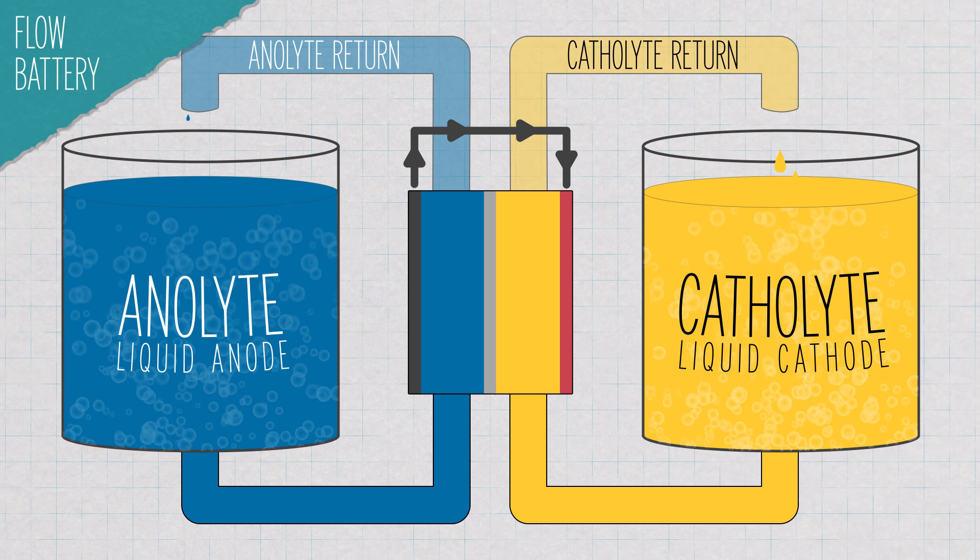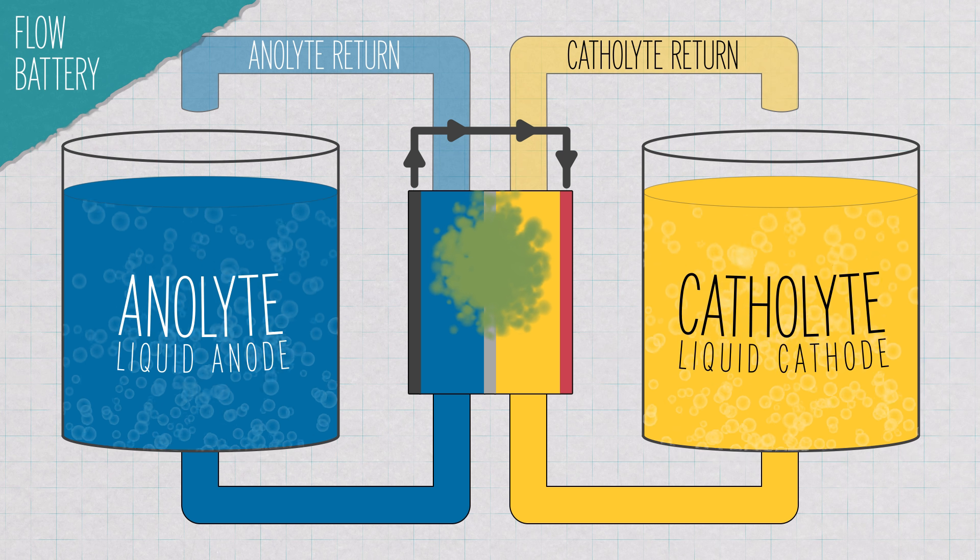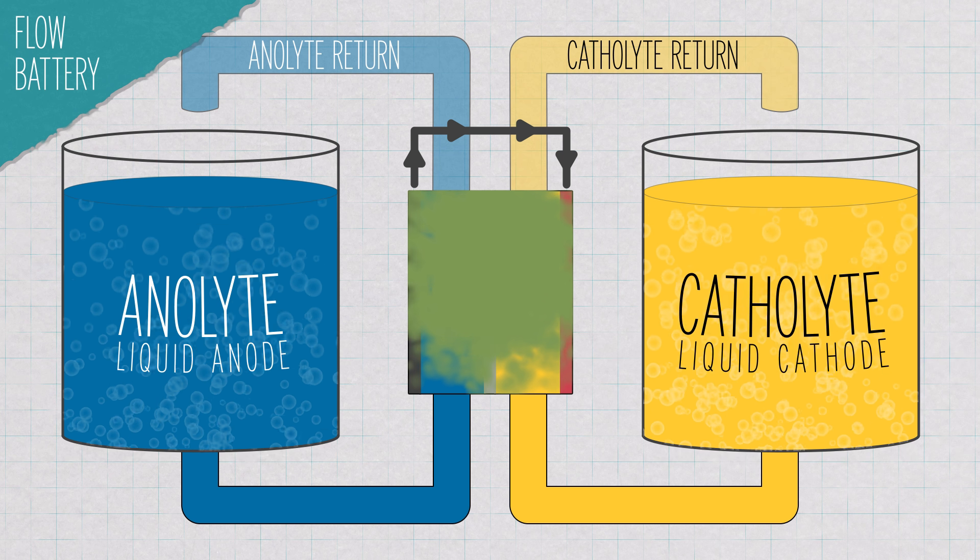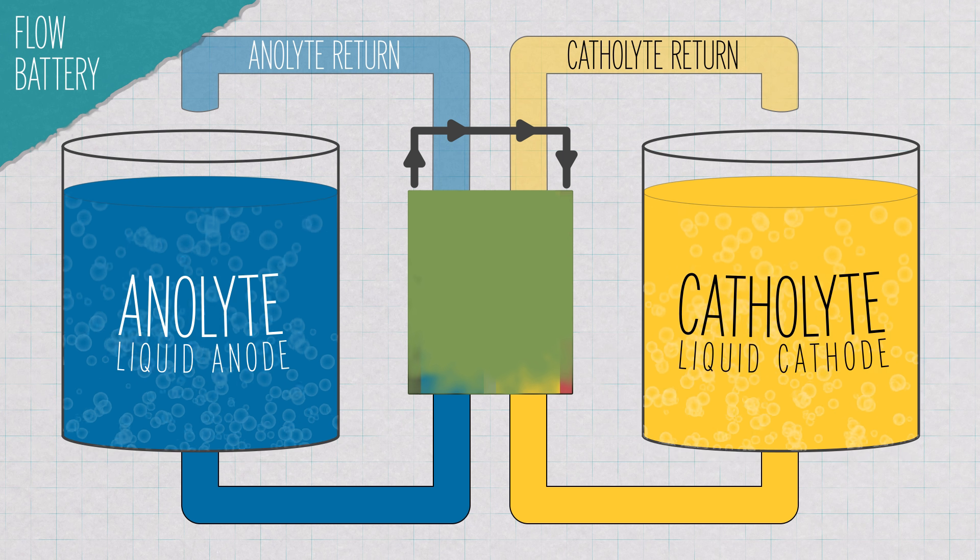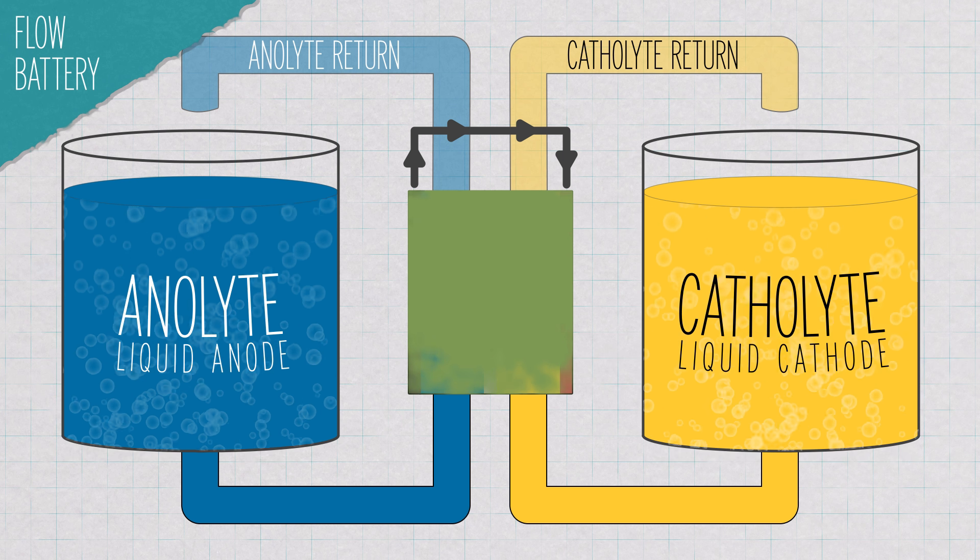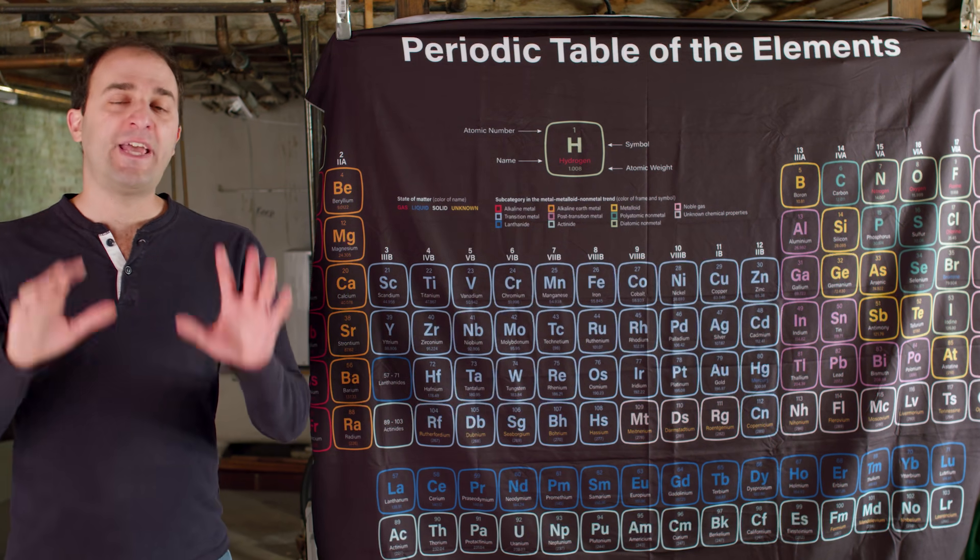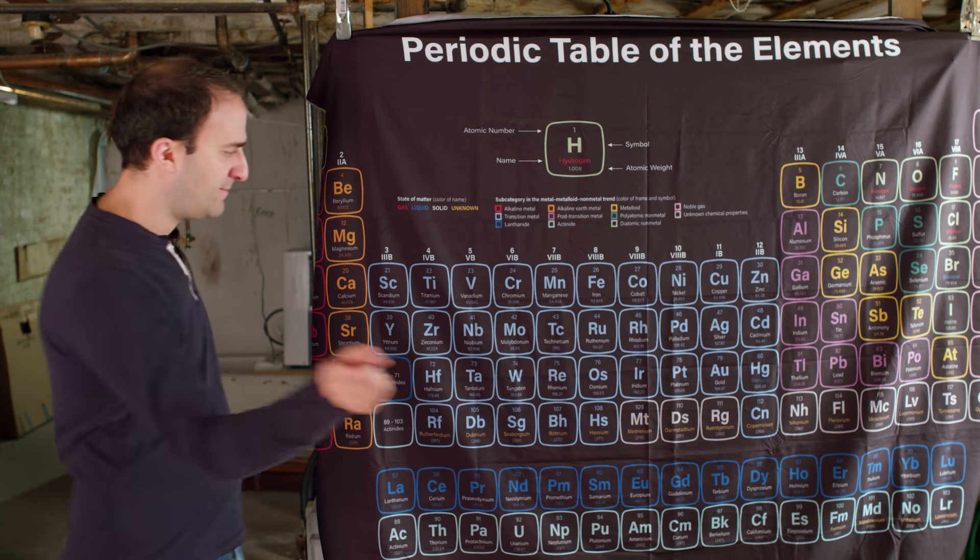You can see immediately from this diagram that a leak could cause the anolyte and catholyte solutions to mix and react with each other. If that reaction is irreversible, your battery would at the very least lose capacity over time, and at the very worst, be broken and unfixable. So in the 1980s, researchers at the University of New South Wales invented a new type of flow battery based on a single element, vanadium.